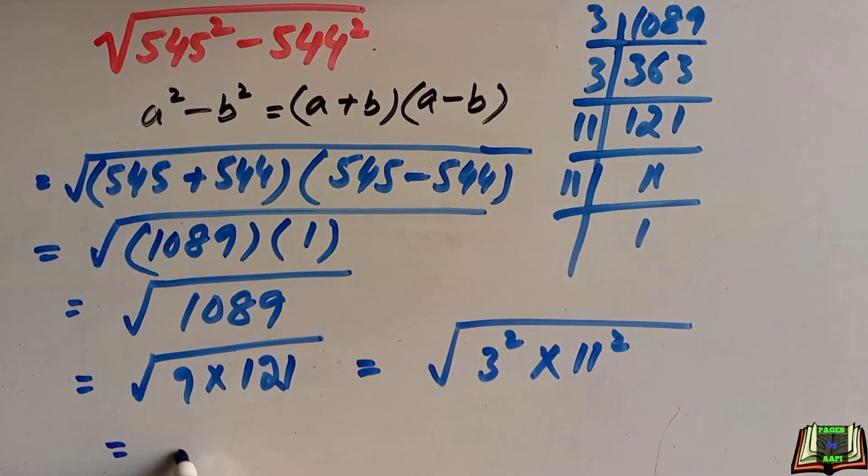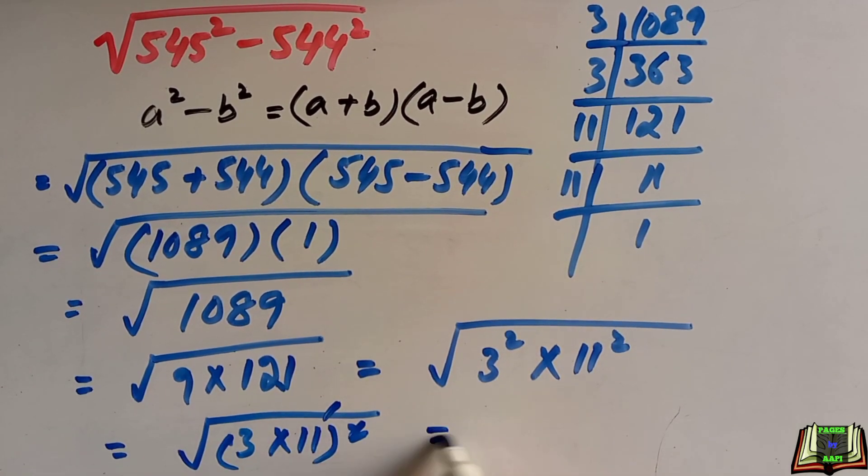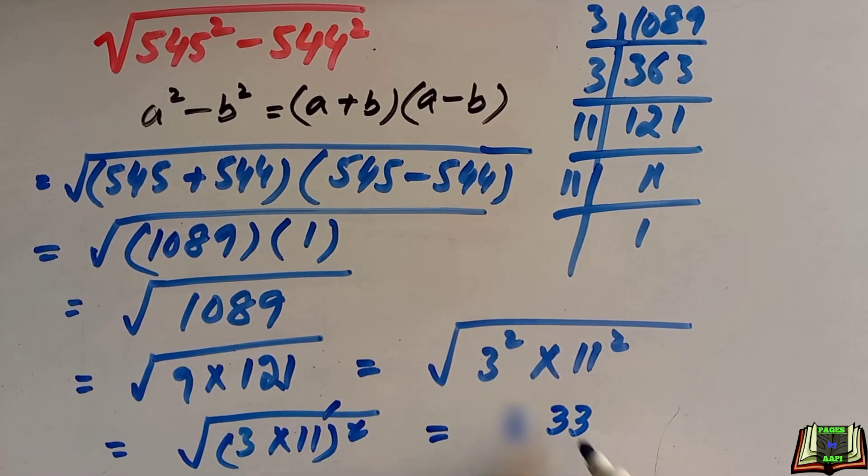So 3 times 11 whole square—this square and square root cancel out—this is equal to 33, which is the required and final answer.